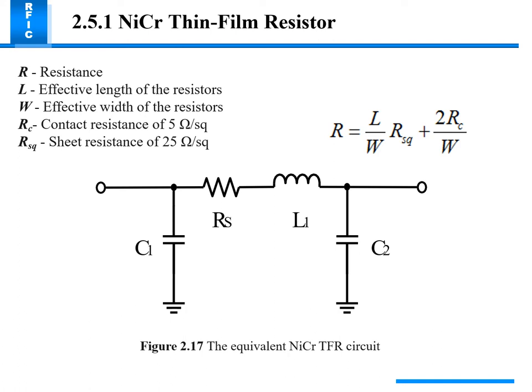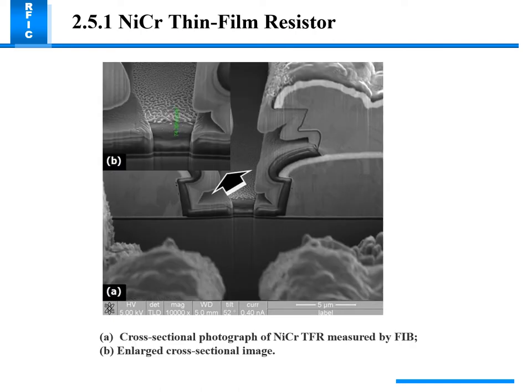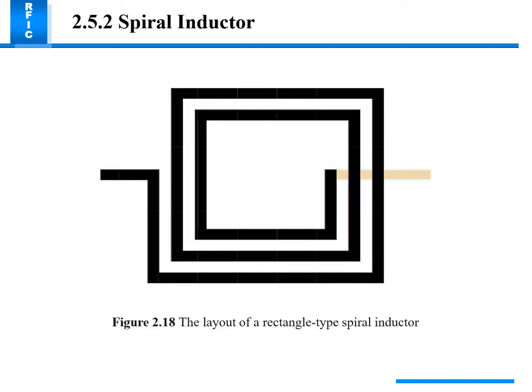The equivalent circuit and SEM image of the NiCr TFR shows an enlarged SEM photograph of the device. A cross-section photograph of the NiCr TFR measured by FIB shows the enlarged cross-section images and the layout of a rectangular typical spiral inductor.